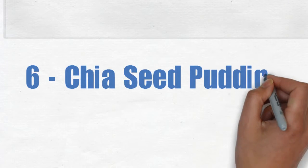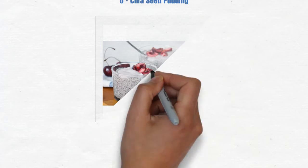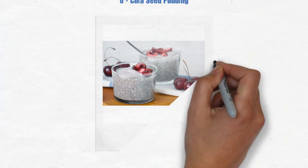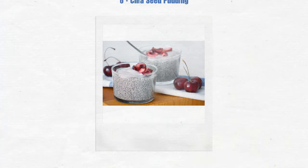6. Chia seed pudding. This is a fairly new product in the US and not well known, but chia seed pudding is delicious and highly nutritious. The chia seeds pack a punch of nutrients and keep you full for hours.